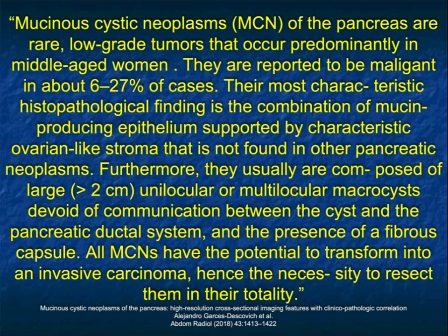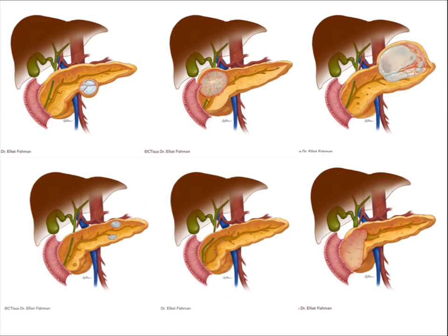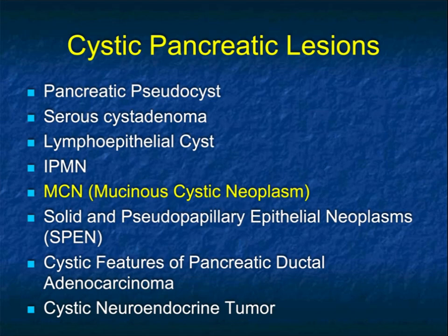In conclusion: mucinous cystic neoplasms of the pancreas are rare but becoming more common — low-grade tumors that occur predominantly in women around age 45. Up to about 27% or so can be malignant, though the majority are not, and that 27% is probably a high number — likely closer to single digits. Since all MCNs have the potential to transform into invasive carcinomas, it's very important to resect these early for a very good outcome. I thank you for this talk on MCNs of the pancreas and hope you find it useful.